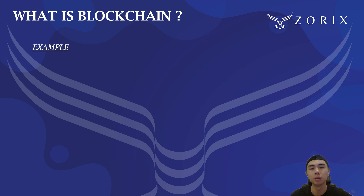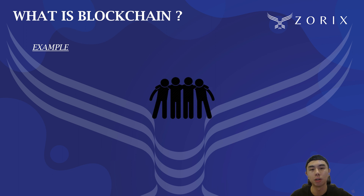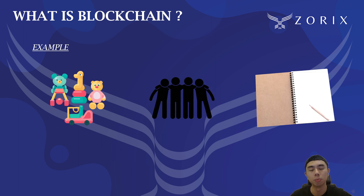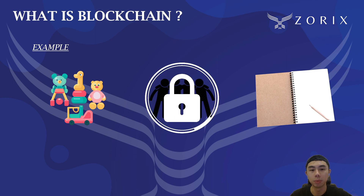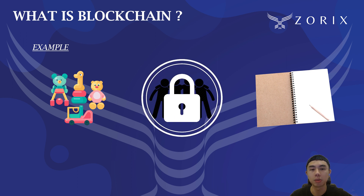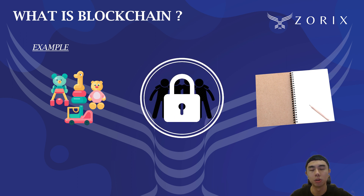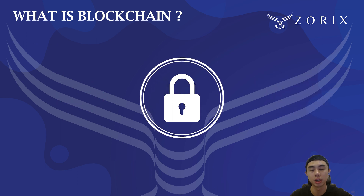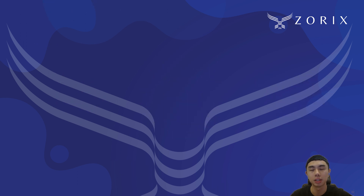For example, imagine you and your friends want to keep track of who owns what toys. You could write everything down in a notebook. But what if someone lost the notebook or someone changed what was written in it? A blockchain is like a notebook that everyone has a copy of. When someone makes a change to the blockchain, everyone's copy of the notebook is updated. This makes it very difficult to change or cheat this system.